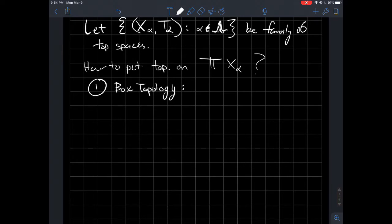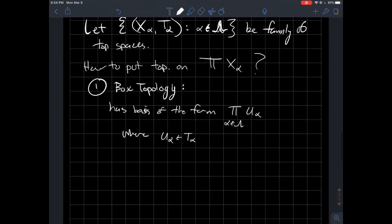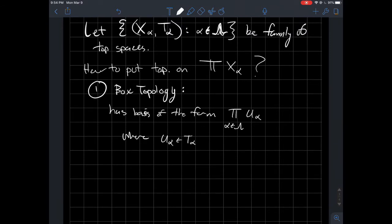For the box topology, the basis has elements of the form products over alpha in my index set, u alpha, where u alpha is in t alpha. That would be an example of a basis element. The basis has elements of the form products of these u alpha, where each u alpha is in t alpha.